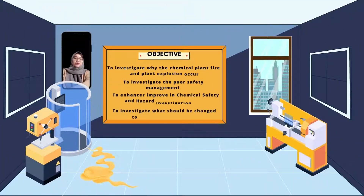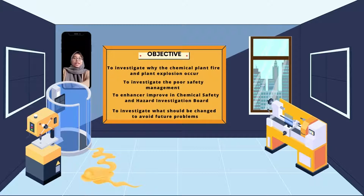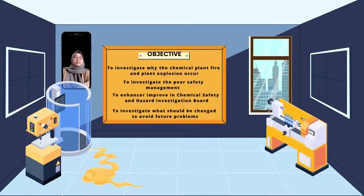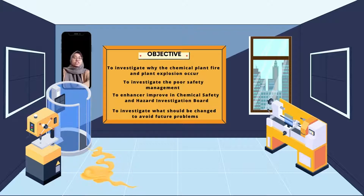Assalamualaikum warahmatullahi wabarakatuh. My name is Nur Aziana binti Azhar, and I will talk about the objectives. The objectives are: to investigate why the chemical plant fire and explosion occurred, to investigate poor safety management, to enhance and improve chemical safety and hazard investigation, and to investigate what should be changed to avoid future problems.